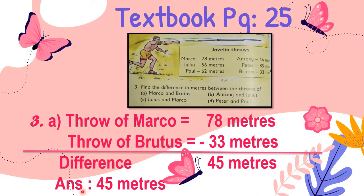Let's start question number 3. There are given some names of persons: Marco, Julius, Paul, Anthony, Peter, and Brutus. They have thrown an arrow and are given the measurement of their throws in meters. You have to find the difference in meters between the throws of the given names. Number A, the names are Marco and Brutus.